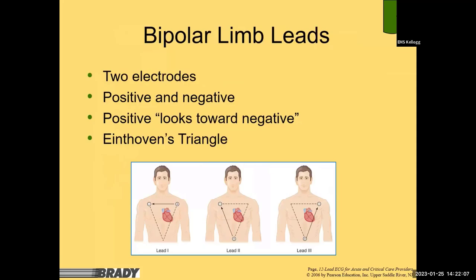The positive lead looking towards the negative establishes our three primary leads: one, two, and three for Einthoven's triangle. Lead one goes from the patient's left over to their upper right, directly across the top of the heart. Lead two looks from the bottom positive lead up to the upper right. Lead three looks in the other angle from the bottom up — almost like a camera turned around taking a picture of what the heart is doing.